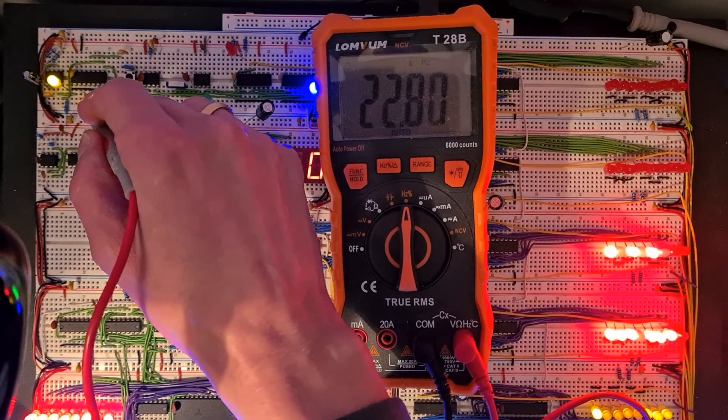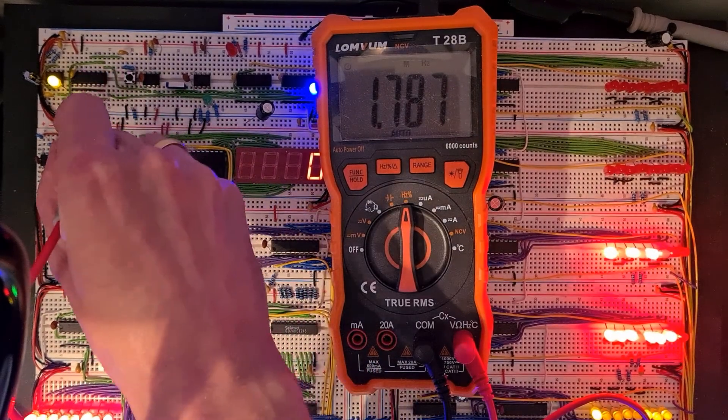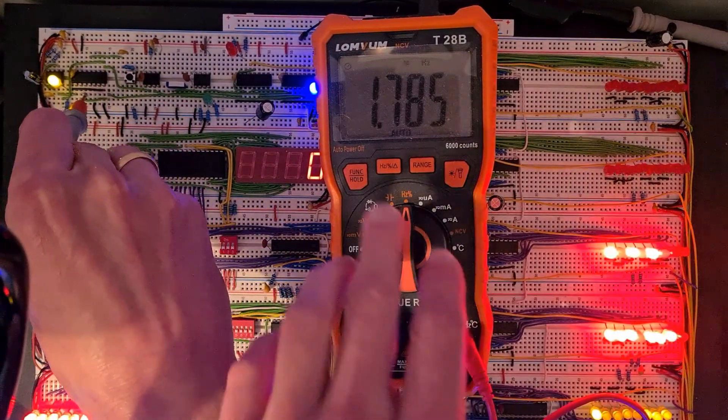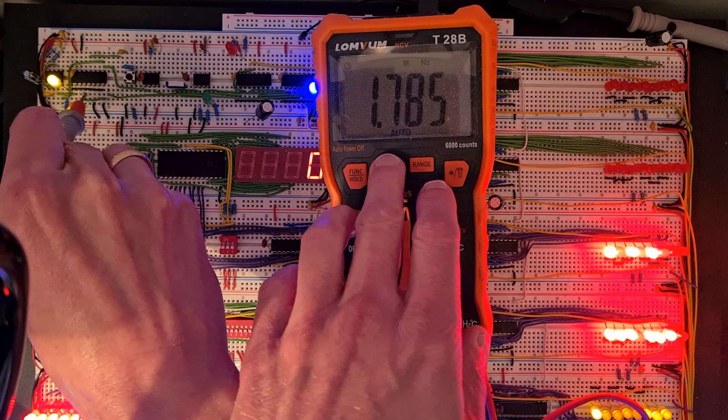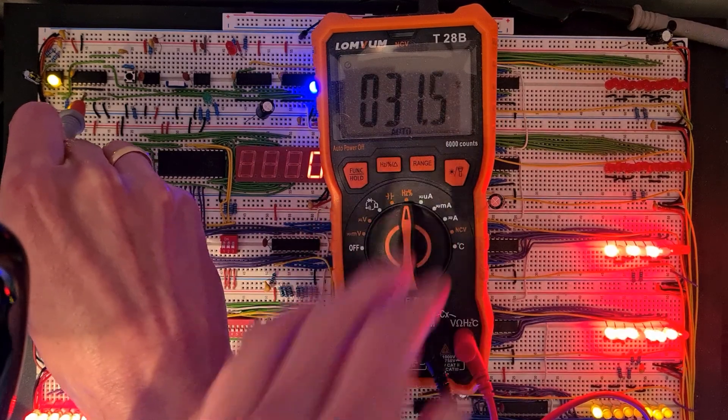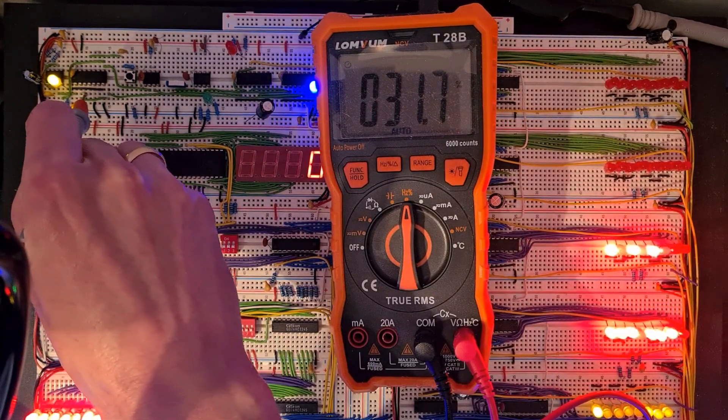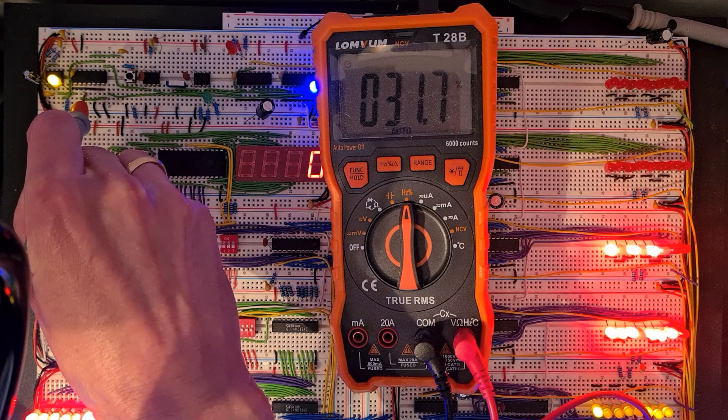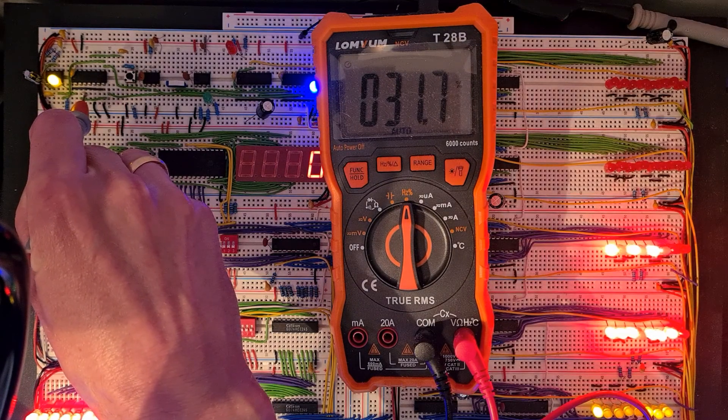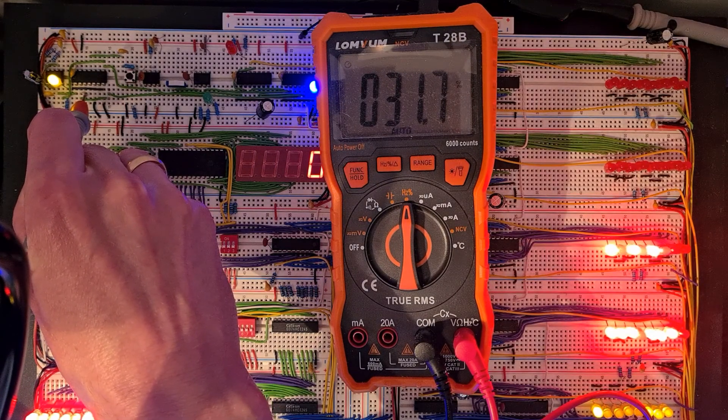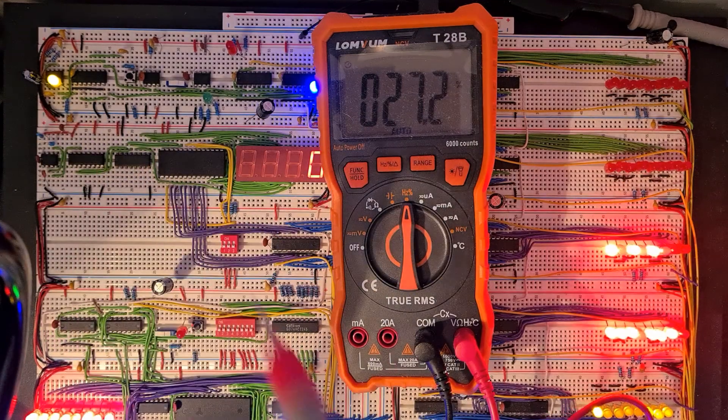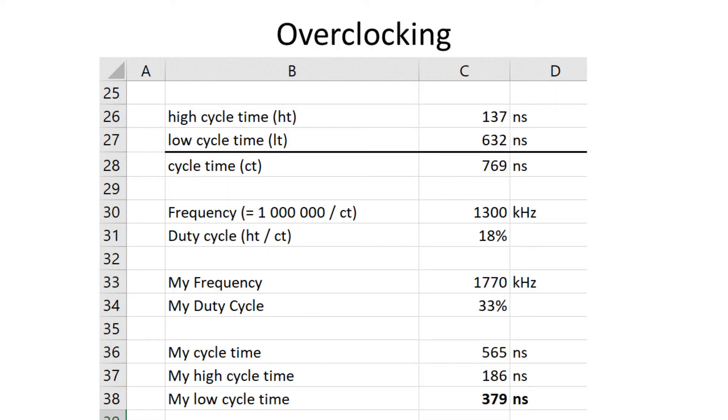In fact my system runs a little bit faster so it's about 1.8 MHz and I have a duty cycle of about 32%. Usually the duty cycle of a 555 timer is higher than 50% but I added an inverter behind the clock and so the duty cycle is lower.